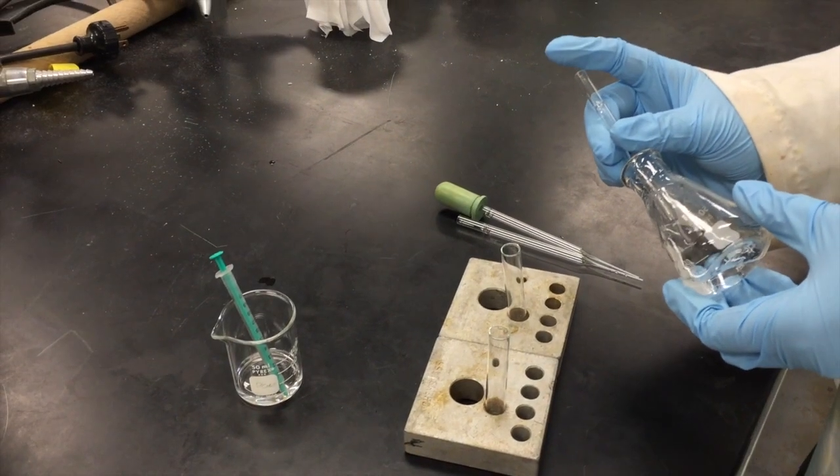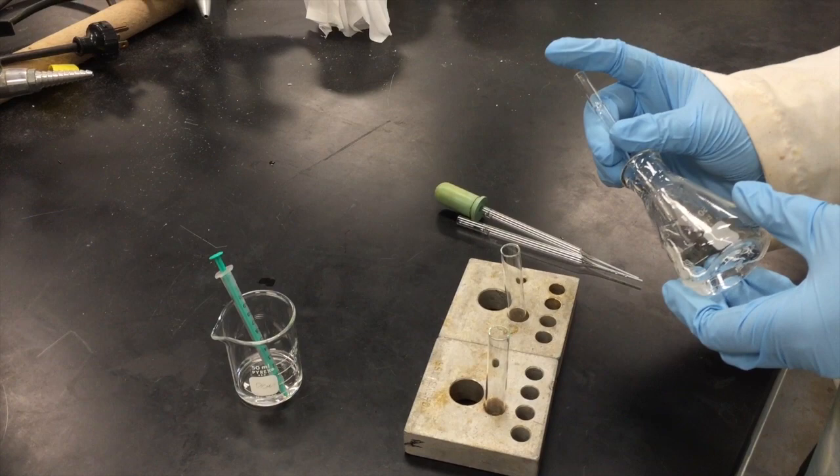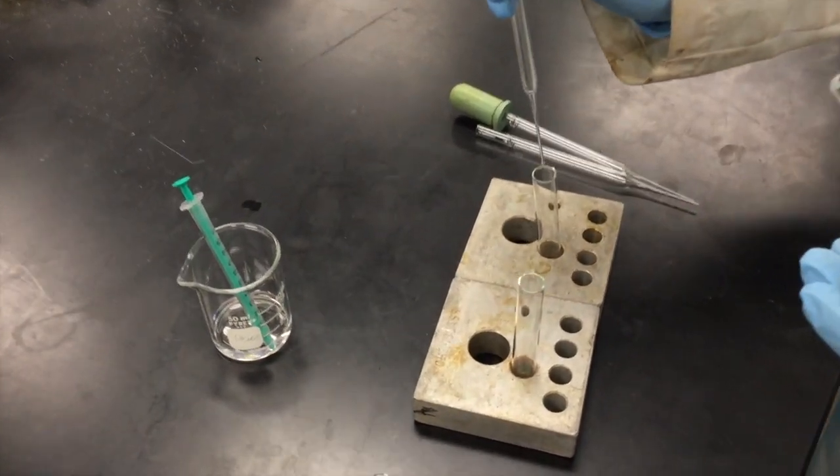Using the tilt pipette capillary action method, add two drops of your sample to the first test tube.